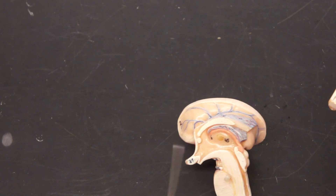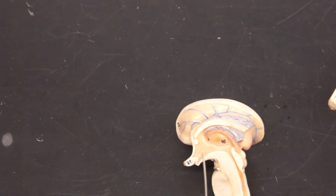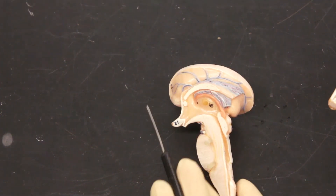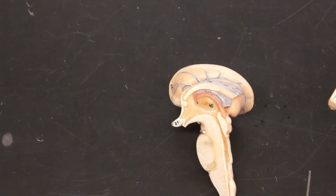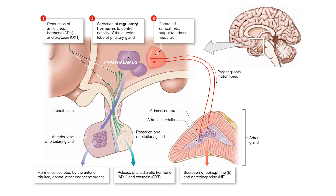For the endocrine system, we have the hypothalamus that produces regulatory hormones, antidiuretic hormone — also known as arginine vasopressin — and oxytocin. Here on the bottom left of your screen, you can see the pituitary gland, also known as the hypophysis. It is divided into the adenohypophysis, the anterior region, and the neurohypophysis, the posterior region.